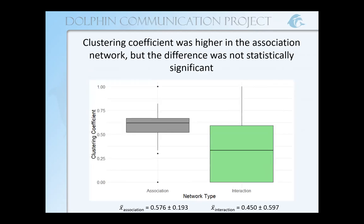I found that the clustering coefficient was higher in the association network, but that this difference was not statistically significant. This high clustering coefficient suggests a redundancy in connections, making it more resilient to the loss of individuals. With more connections overall in the association network, there's likely to be more redundancy. But it does seem that even in the interaction network we might have a similar redundancy, though the distribution is much wider in the interaction network than in the association network.